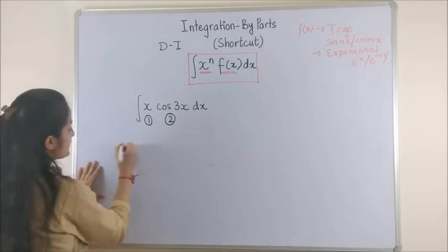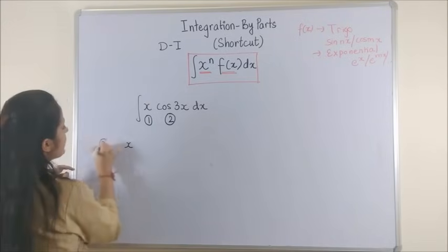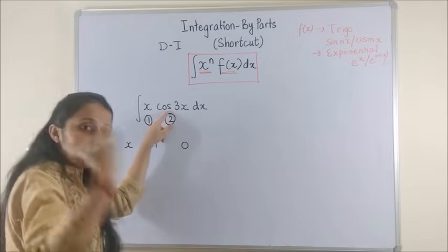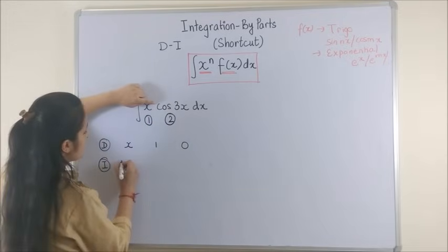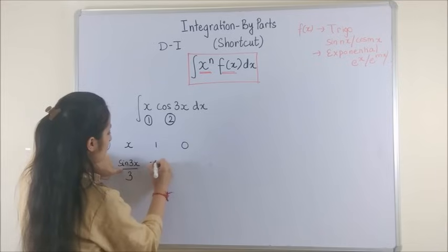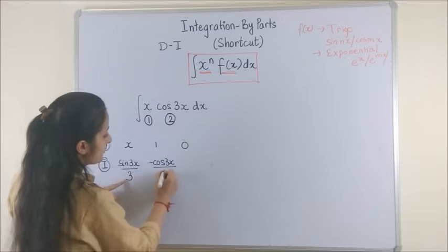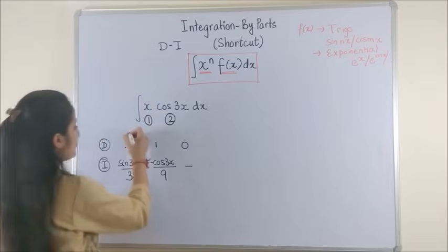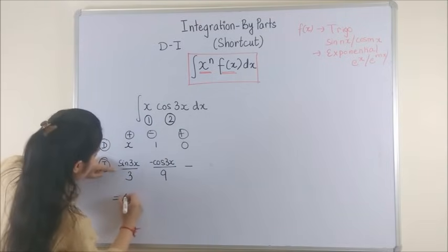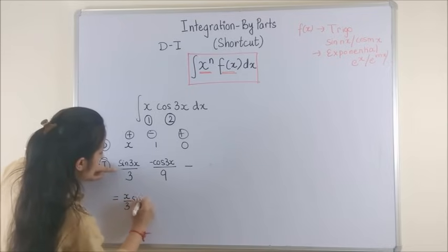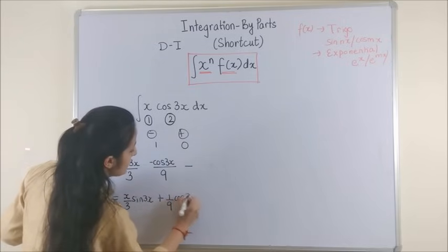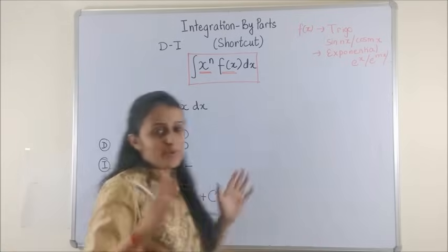So now taking x as the first function again, I write x as it is. Then I start differentiating. So this is 1 and then this is a 0, and I begin integrating it at the very beginning. So we get sin 3x upon 3. Next on integrating this again, we get minus cos 3x upon 3 into 3, that's a 9. Here I don't have to do anything since we already have a 0. Now put plus, minus and plus, and now the answer will be this multiplied. This will be x by 3 into sin 3x. Now minus and minus makes it plus. So it's plus 1 by 9 cos 3x and here it is anyway a 0 so plus c. Wasn't that easy?